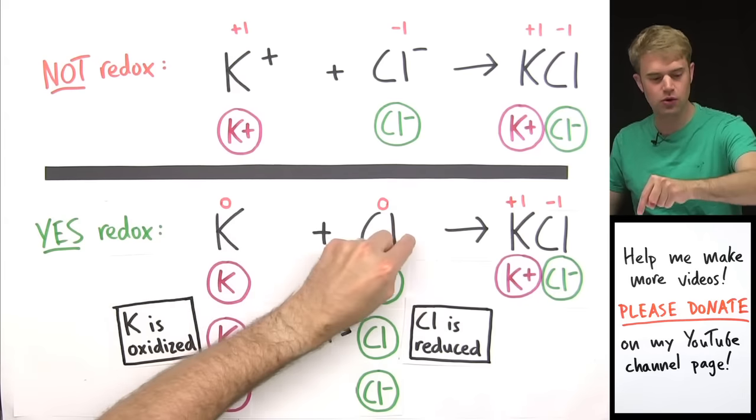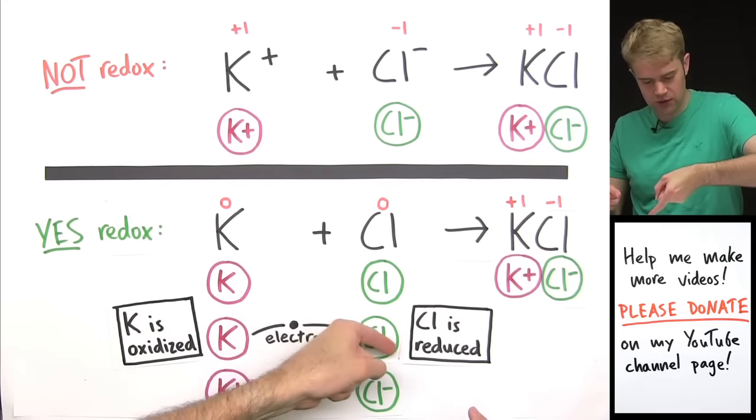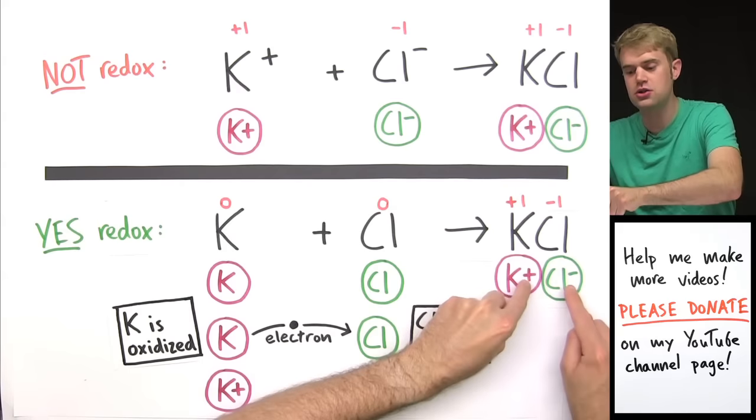Because potassium and chlorine, K and Cl, start out neutral. There's a transfer of electrons which gives them charges and then those charges stick together.